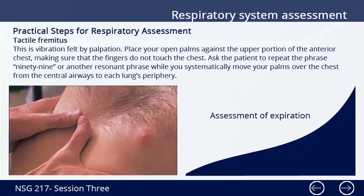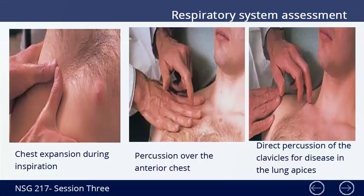Practical steps for respiratory assessment include tactile fremitus, which is a vibration felt by palpation. Place your open palm against the upper portion of the anterior wall, making sure the fingers do not touch the chest. Ask the client to repeat the phrase '99' while you systematically move your palms over the chest from the central airway to the lung periphery. Also performed is percussion of the anterior chest wall and direct percussion of the clavicles for disease in the lung apex.